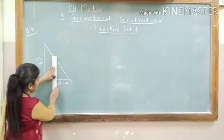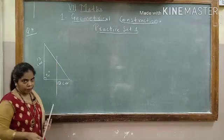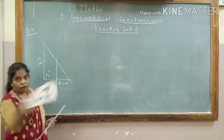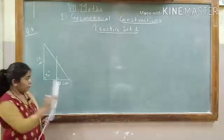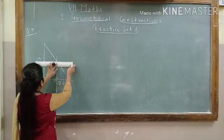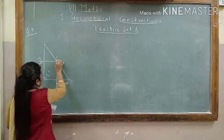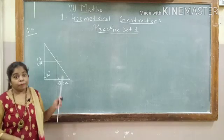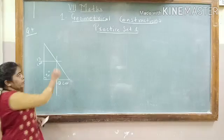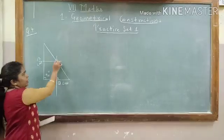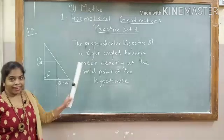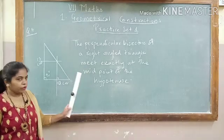90 degrees. This is a perpendicular bisector. You should make sure that this is 90 degrees. We have not used the protractor or the compass for this — we are just showing the perpendicular bisectors this way. From here also, we will draw a perpendicular bisector. See, the two of them are meeting exactly at the midpoint of the hypotenuse. If I draw the perpendicular bisector for the hypotenuse, it is going to meet at this same point. So the answer is: the perpendicular bisectors of a right angled triangle meet exactly at the midpoint of the hypotenuse.